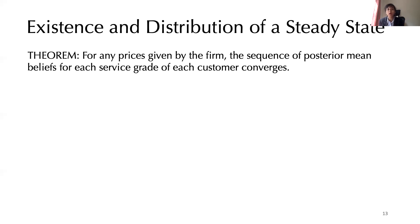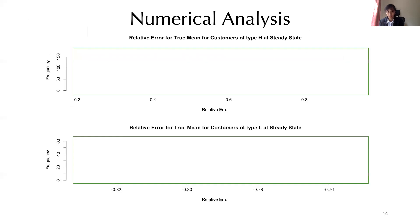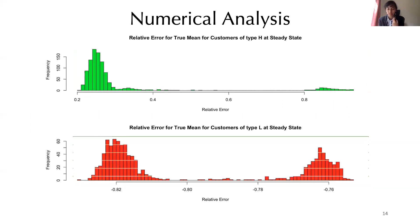Fortunately, we can show that for any prices set by the firm, the sequence of posterior mean beliefs for each service grade of customers converge. Further, the decisions of customers converge as well and the system reaches a steady state. But how does the steady state look? We plot the relative error — the difference between the true perceived mean and the true mean — for all customers of the high type (top) and low type (bottom), with frequency on the y-axis. If customers learn the true service quality, these histograms would be concentrated around zero. Unfortunately, the customers do not learn the true service means.